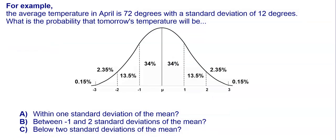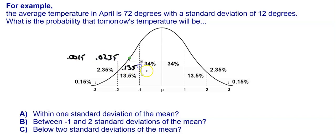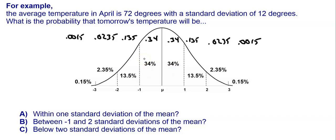For example, the average temperature in April is 72 degrees with a standard deviation of 12 degrees. What is the probability that tomorrow's temperature will be within one standard deviation of the mean? Remember, the percentages talk about how much data is under the curve, and it also represents the area of each section if we turn it to decimals. So we would have 0.0015, 0.0235, 0.135, 0.34, and so forth.